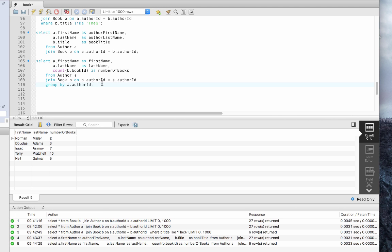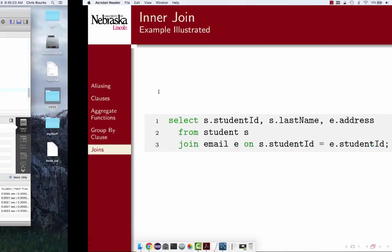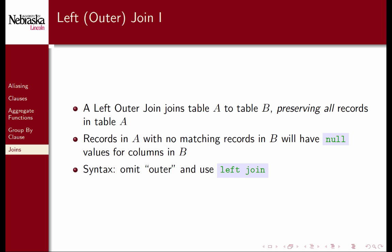A left outer join, or simply just left join, is similar in that it joins two tables A and B, but the key difference is that it preserves all records in table A, even if they do not have a matching record in table B. The values for the missing columns in table B will all have null values. We use the simple syntax left join when making such a query. Note that you can also have right joins that join table B to table A, but that are equivalent to left joins with the tables given in reverse.